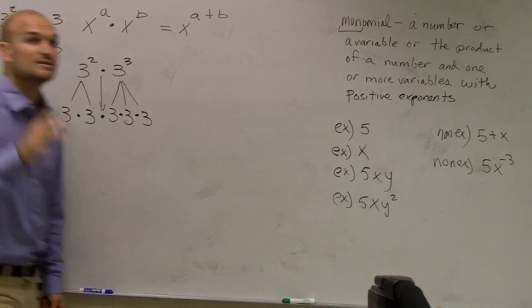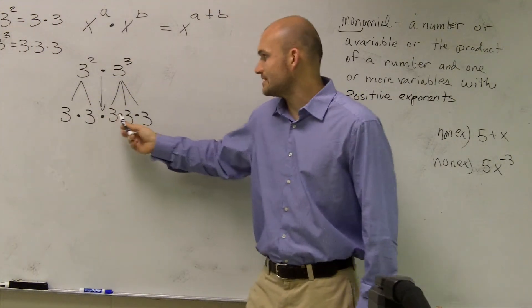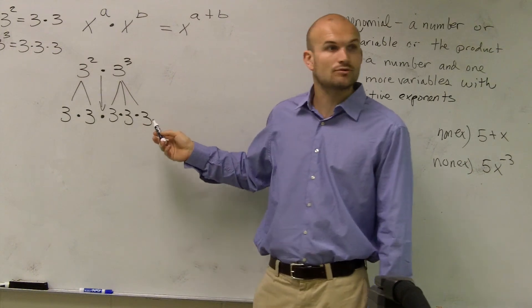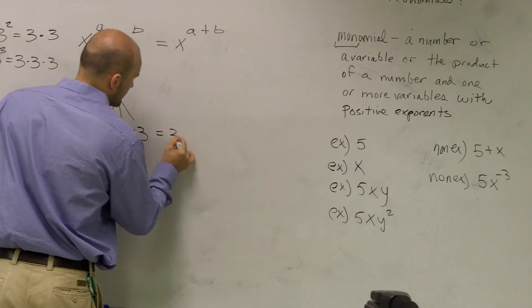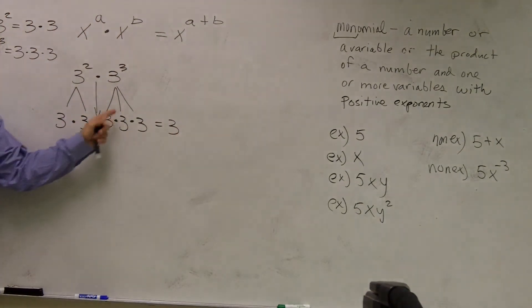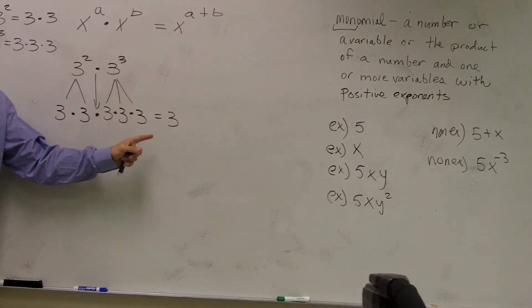Then, by using the definition of exponents, 3 times 3 times 3 times 3 times 3—remember, how many times am I multiplying 3 by itself? 5, 5 times.